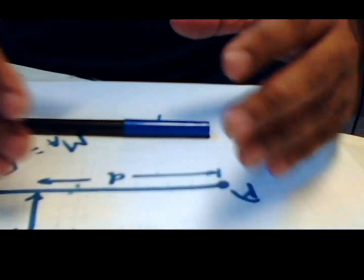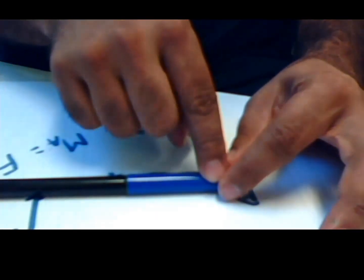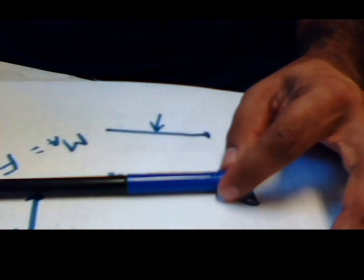Clockwise and anti-clockwise is determined by finding which direction the structure will rotate if you pivot the structure at the point where you are going to take the moment.